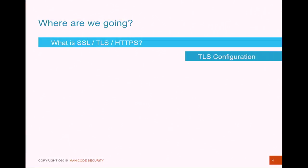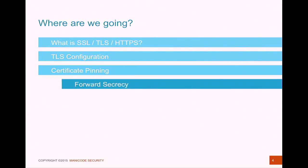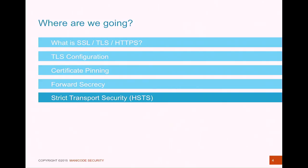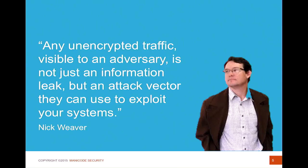So where are we going? We're going to talk about HTTPS, configuration issues, certificate pinning, forward secrecy, and strict transport security. I'm going to move fast. Grab the recording if you miss anything. This is Nick Weaver, some random guy I found on the internet. He said something very wise: any unencrypted traffic visible to the adversary, it's not just an information leak, it's an avenue for attack that the attacker can use to exploit your systems. An attacker can inject any code they want into an HTTP or poorly configured HTTPS connection and add evil JavaScript or other attacks.